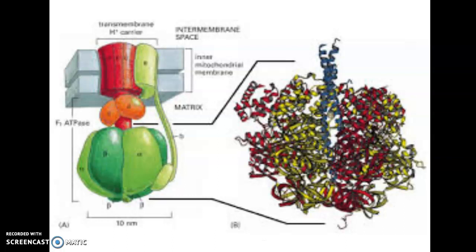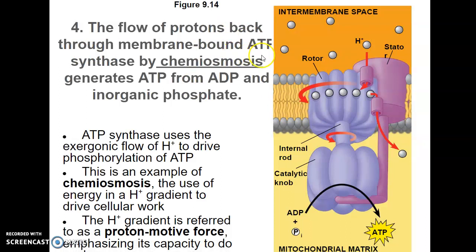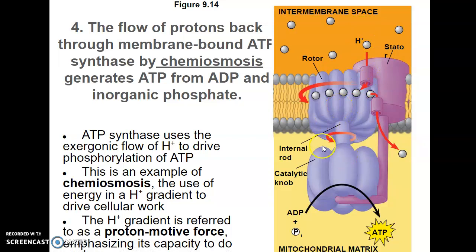Three out of the six subunits in this lollipop head have binding sites for ADP and inorganic phosphate. ATP synthase is very efficient — it can produce about 100 ATP molecules per second. Here's the picture from your textbook showing the flow of protons back through the membrane-bound ATP synthase by chemiosmosis, generating ATP from ADP and inorganic phosphate. Here again are your stator, the rotor, the channel for hydrogen ions to move through, the internal rod, and the catalytic knob that turns like a rotor.